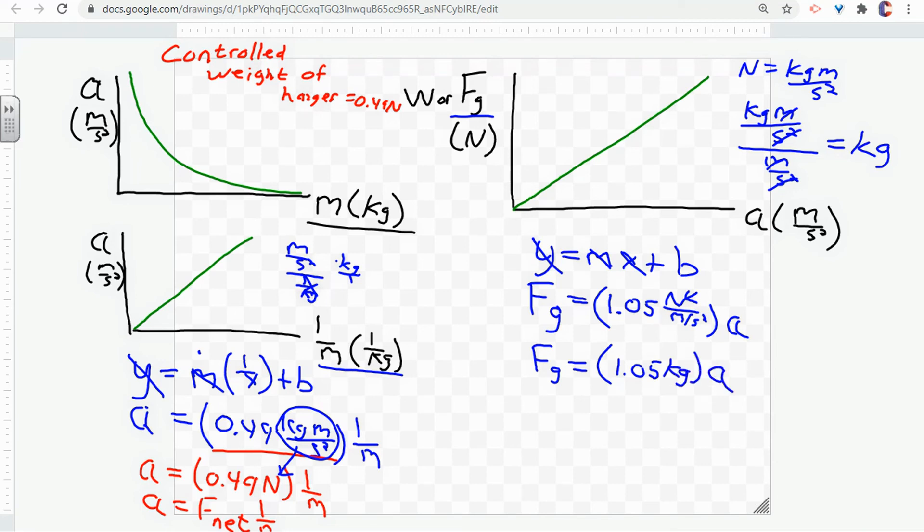So what this means is that the force of gravity is equal to 1.05 kilograms times acceleration. Well, what was measured in kilograms? Our control. The mass of the system, the mass of the system was the mass of the car, which was 1 kilogram, plus the hanging weight, which was 0.05. And our system mass was 1.05 kilograms.